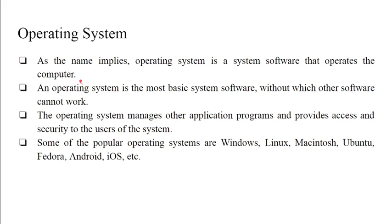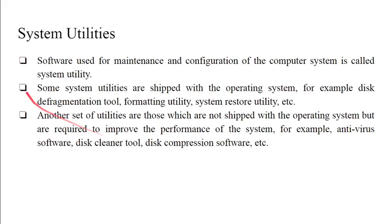Operating system is a type of system software without which the computer will not work. As the name implies, it is the system software that operates the computer. It is the most basic system software without which other software cannot work. The operating system manages other application programs and provides access and security to the users. Some popular operating systems are Windows, Linux, Macintosh, Ubuntu, Fedora, Android, and iOS.